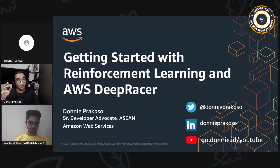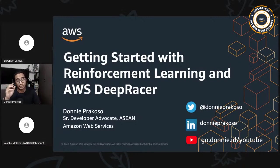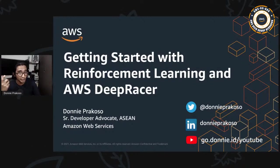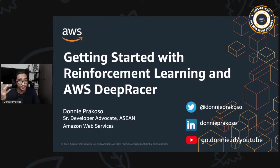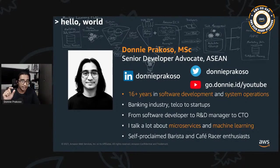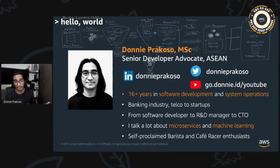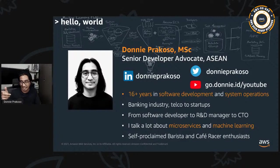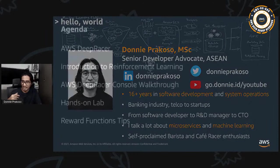Just to set the expectation level, this is a session between level 100 and 200, which means it perfectly fits if you're just getting started with DeepRacer, or even if you've already crafted your reward function and are looking for tips and tricks to improve your model. My name is Donny Prakoso, Senior Developer Advocate for AWS covering the ASEAN region. I started as a software engineer, R&D manager, and CTO for several startups, specializing in microservices, event-driven architecture, and machine learning.